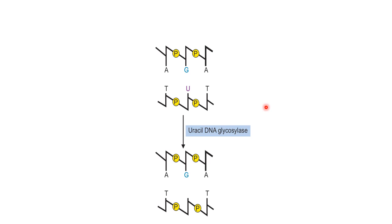Once a particular base is removed, it leads to the creation of a specific site. If a purine is removed, it creates an apurinic site, which is a site devoid of adenine or guanine. If a pyrimidine is removed, it creates an apyrimidinic site, also called a basic site. If uracil is present due to deamination of cytosine, it will be cleaved by uracil DNA glycosylase enzyme, creating an apyrimidinic site.